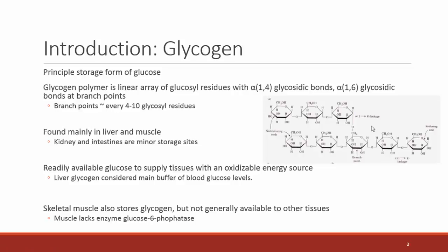Glycogen is found primarily in the liver and muscle cells. Its purpose is to be a storage form of glucose so that when the body needs glucose, it is able to cleave individual glucose molecules off the glycogen to serve as a ready, available energy source. The glycogen stored in our liver is considered the main buffer of blood glucose levels, because we can cleave off glucose molecules from liver glycogen and distribute them in the bloodstream to different parts of the body.